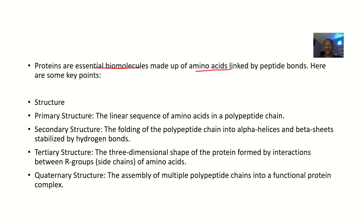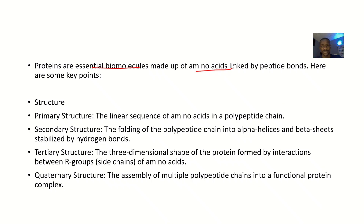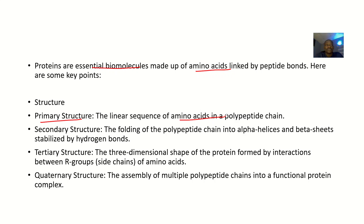Here are some key points about proteins, starting from the structure. Everyone knows the structure of proteins: primary structure, secondary structure with alpha helix and beta sheets, tertiary as three-dimensional, and quaternary involving subunits. For the primary structure, it's the linear sequence of amino acids in a polypeptide chain — different amino acids linked together in a straight line with no folding.